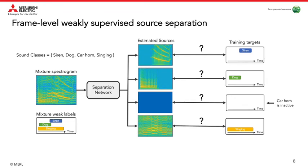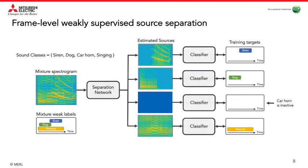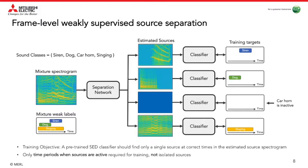A high-level presentation of our separation system is demonstrated in this block diagram, where the input mixture and estimated sources are presented as spectrograms. The training targets, however, are frame-level weak labels, which cannot be directly compared to estimated sources. Nevertheless, if we have a good SED classifier, we can use it to convert the estimated source spectrograms into time-domain source activity predictions that can be compared directly to frame-level weak labels. Our model is thus comprised of two main components: a separation system and a sound event classification system. In our experiments, we pre-train the classifier on audio mixtures and fix its weights when training the separator, so isolated sources are no longer required for separation training.